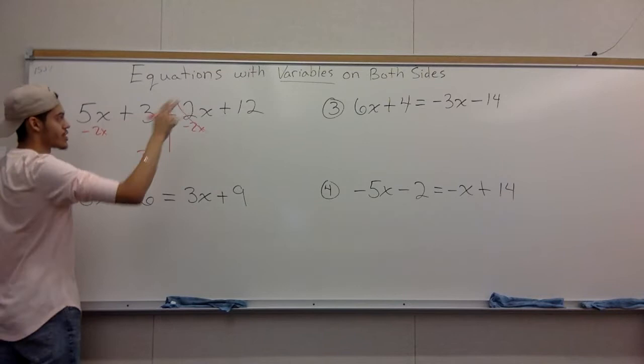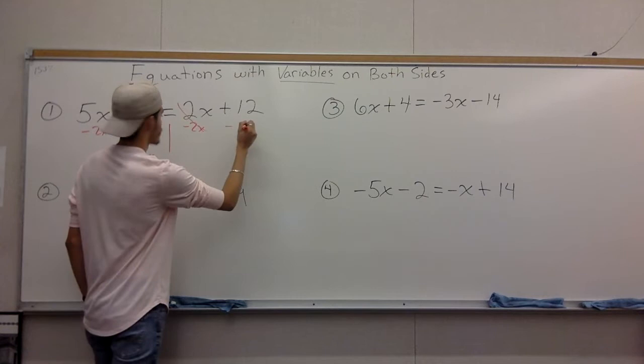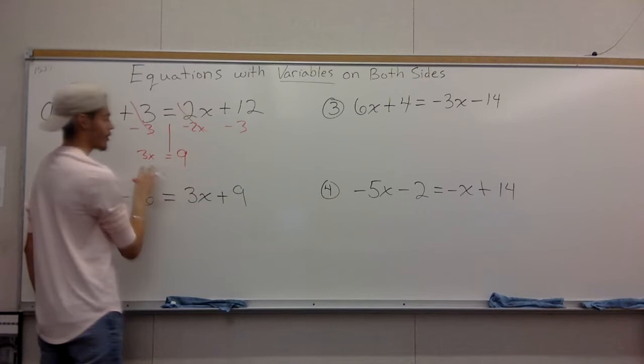If you have this plus 3, move it to the other side. So you subtract 3 to one side, cross it off so you don't have to worry about it, subtract 3 to the other side, we have 12 minus 3, you have 9.